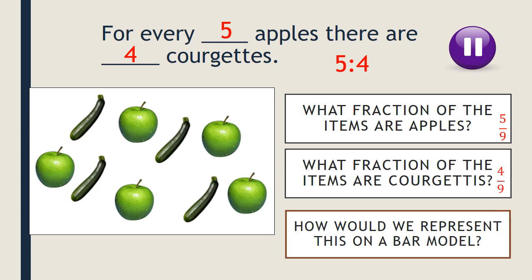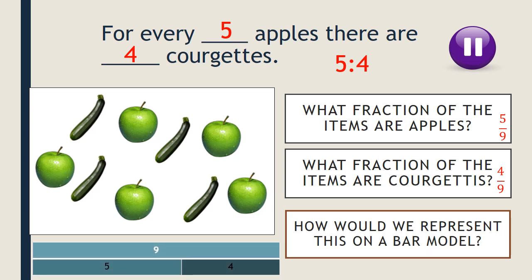What fraction of the items are courgettes? We know five ninths are apples, so four out of nine are courgettes — four ninths. If we represent this on a bar model, nine is our total shown on the top bar, and underneath we split it to show five apples and four courgettes. Well done if you managed to get that.